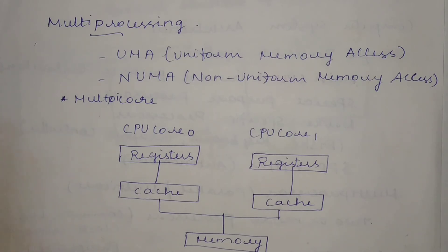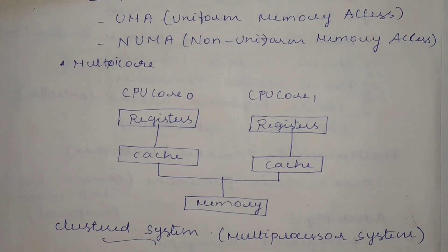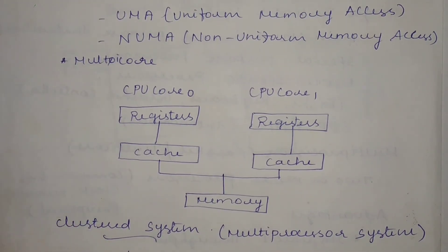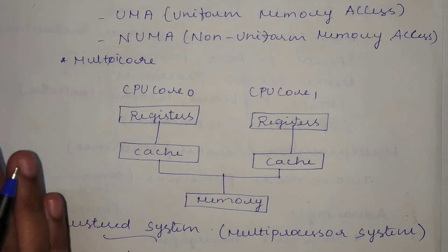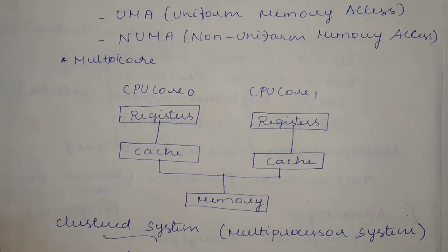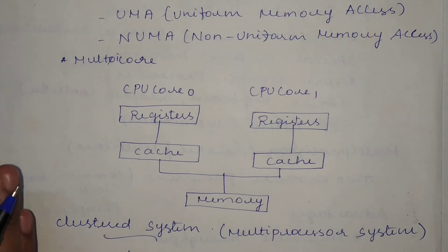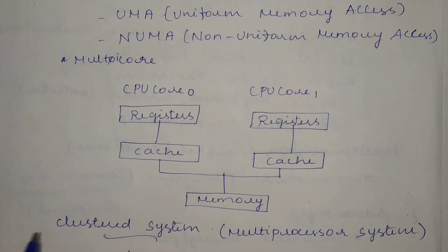One more concept under multiprocessing is multicore. In addition to multiprocessing, we also have the concept of multicore. Multicore means using the same chip — there will be only one chip — and in that chip, more than one processor or core will be enabled. So if more than one processor is embedded in the same chip, that is what multicore.